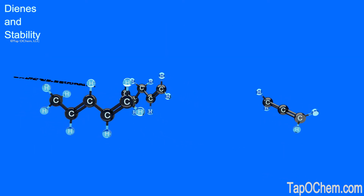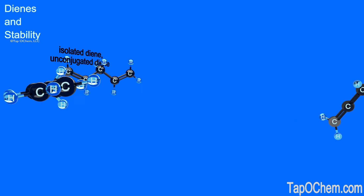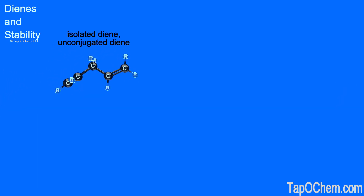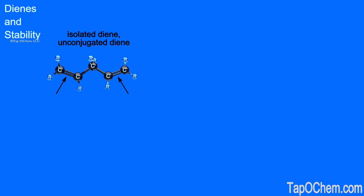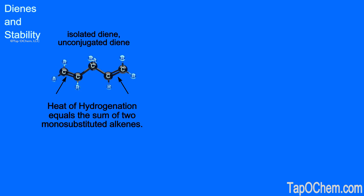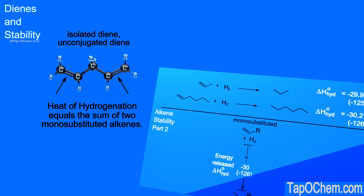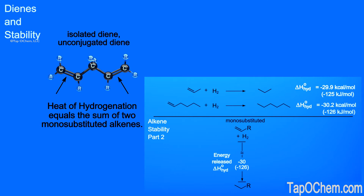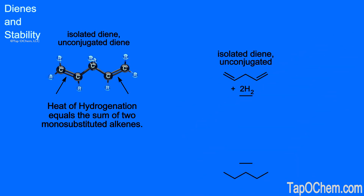Let's focus on the isolated diene. The two carbon-carbon double bonds in this molecule are isolated. Since we basically have two monosubstituted alkenes, the total heat of hydrogenation is approximately equal to the sum of two monosubstituted alkenes — about negative 30 kilocalories per mole each. For 1,4-pentadiene, the heat of hydrogenation is approximately twice that number, giving a value of negative 60.4 kilocalories per mole.